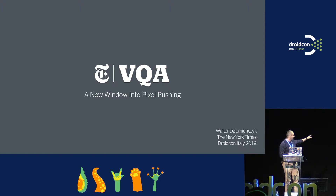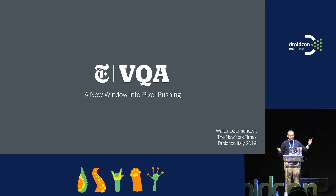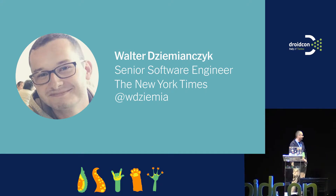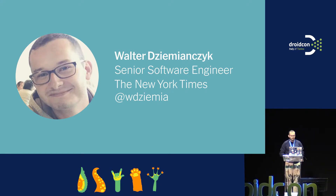That face is me. My name is Walter Jumianczyk. I'm a senior software engineer at the New York Times, and that's my Twitter handle if you want to spam me. I've worked on many different projects at the New York Times, but most of them have to deal with UI.